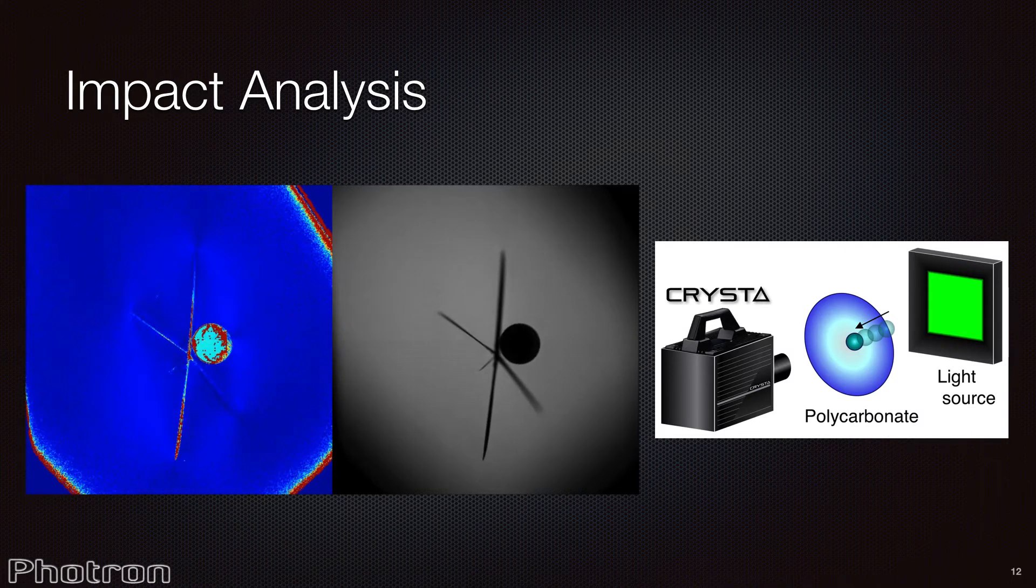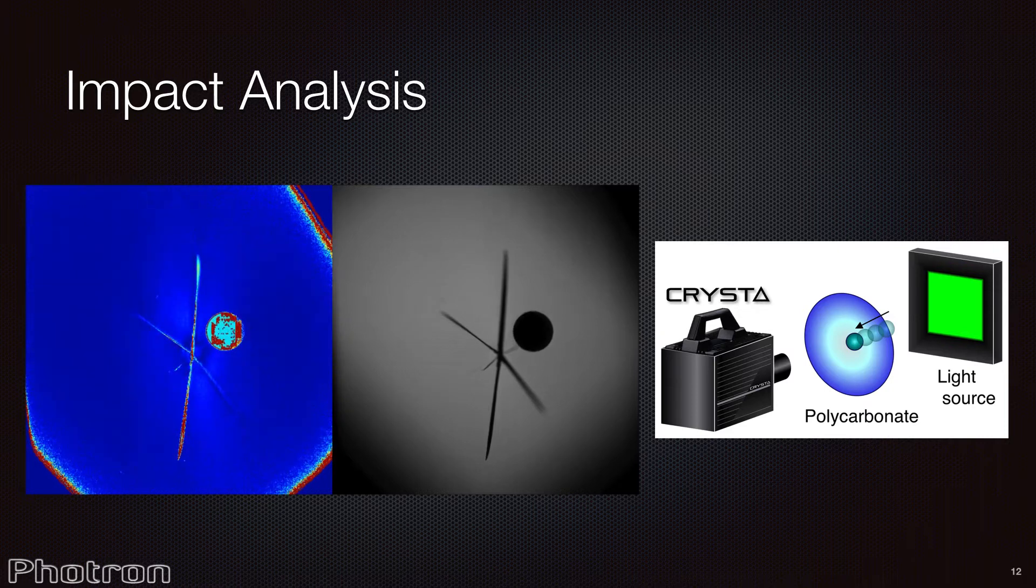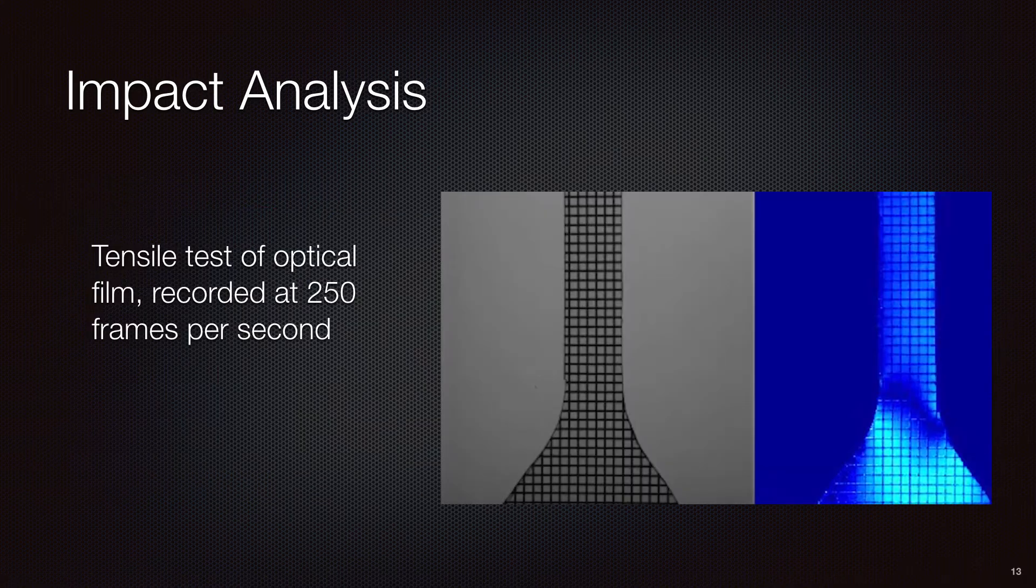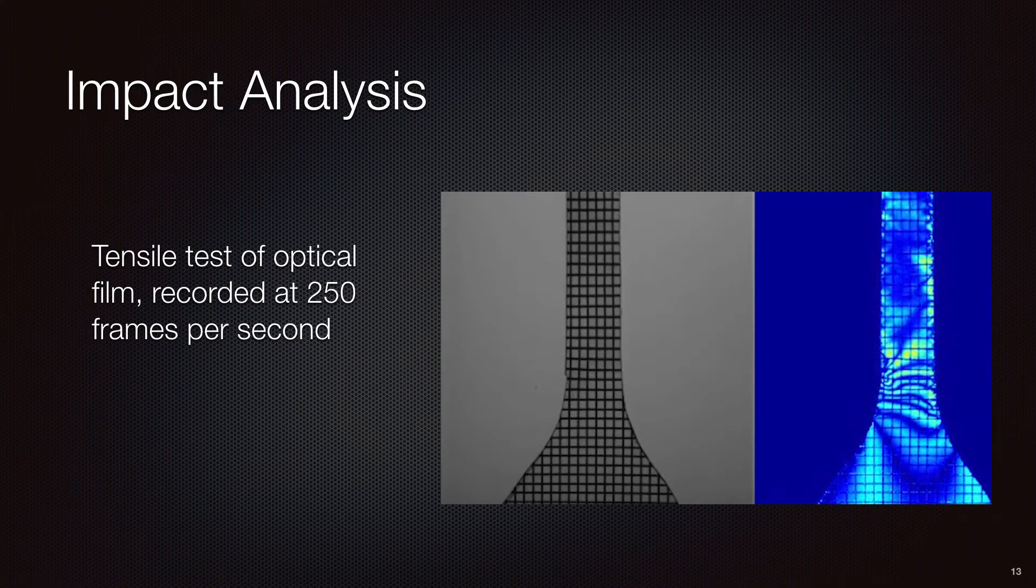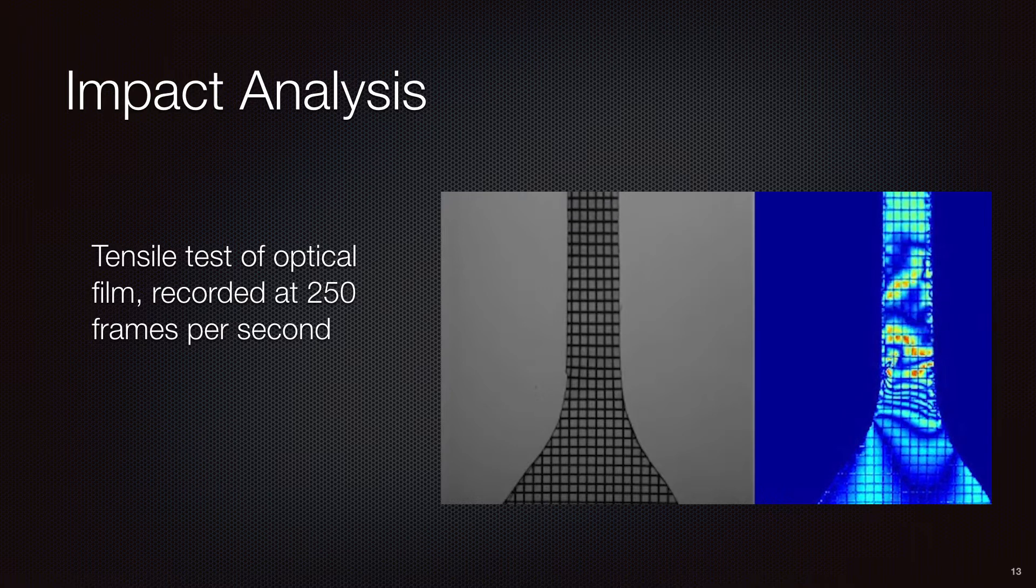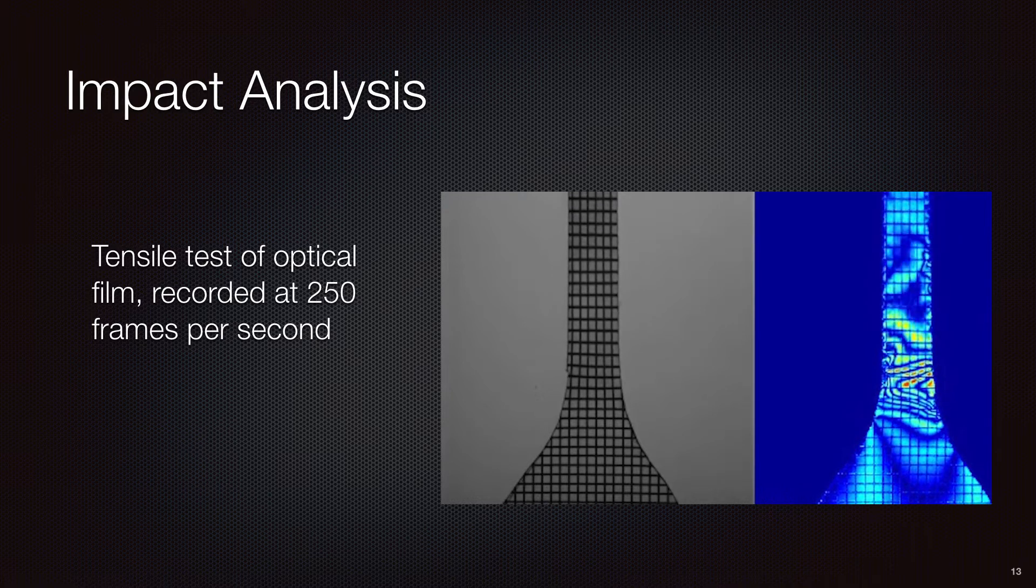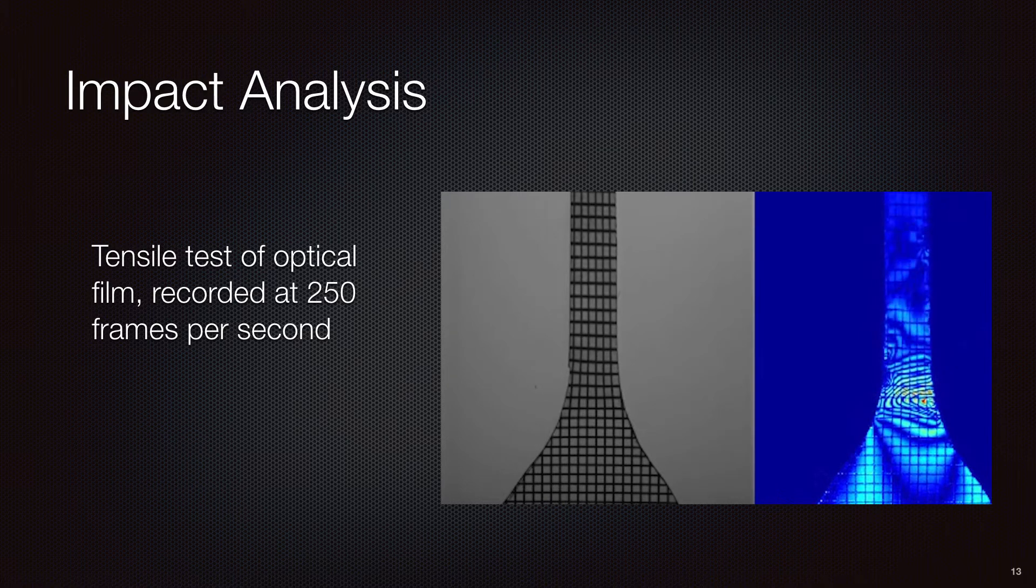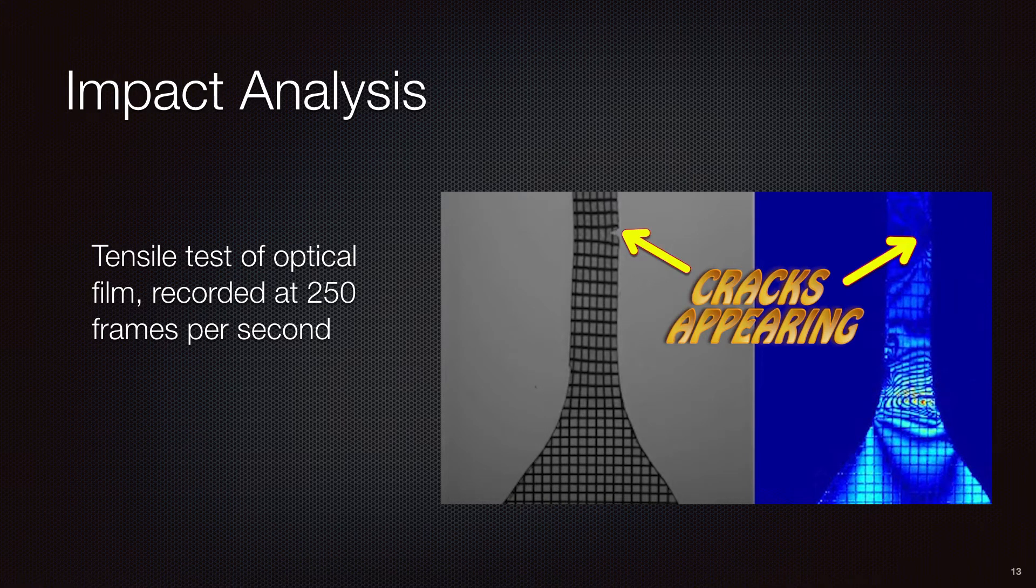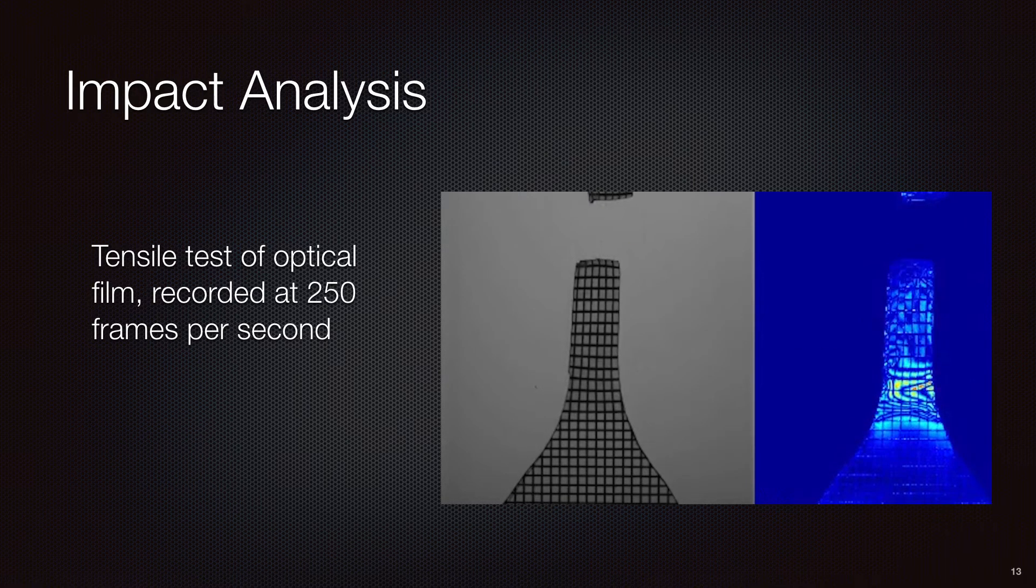The video on the left is of a ball bearing impacting a safety lens recorded with the Crysta at 7,000 frames per second. Here is another high-speed retardation video captured with the Crysta, this time of a tensile test performed on a thin optical film. It is not terribly clear in this example, but you can see the cracks appearing at the neck near the top of the film. We can, of course, adjust the scale of the data being displayed.